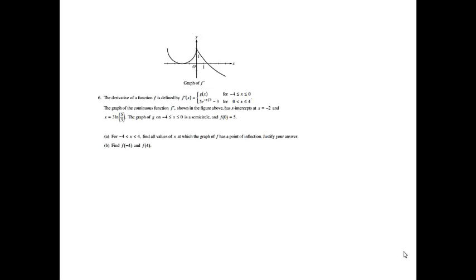Problem six. The derivative of a function is defined by f prime as a piecewise function. The graph of the continuous function f prime, shown in the figure above, has x-intercepts at x equals negative 2 and x equals 3 ln(5/3). The graph of g on negative 4 to 0 is a semicircle, and f of 0 equals 5. Part a: for negative 4 to 4, find all values of x at which the graph of f has a point of inflection. Justify your answer.